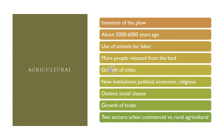This includes Eastern and Western Europe, Rome, Greece, and parts of Africa. This is where we invented the plow and used animals for labor, so more and more people were released from the land.